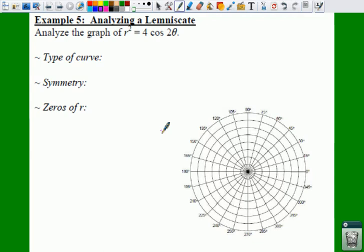Our last example here is number 5, where we have to analyze a lemniscate. Here we're going to analyze a graph of r squared equals 4 cosine 2 theta.